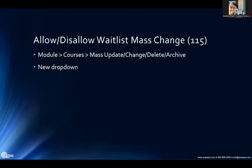Allow/disallow waitlist. This is on the mass change — mass update, change, delete, archive area. Somebody asked: why don't we have the allow waitlist or disallow waitlist right from that area so they can change all their courses in mass? So we added a new dropdown to that area and you can now use that. That came out last month in the 115 release.